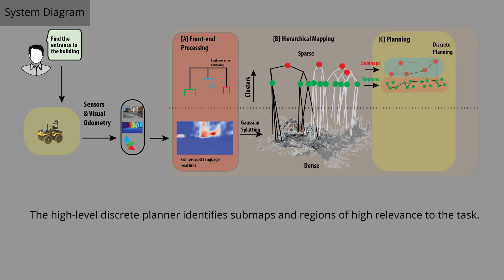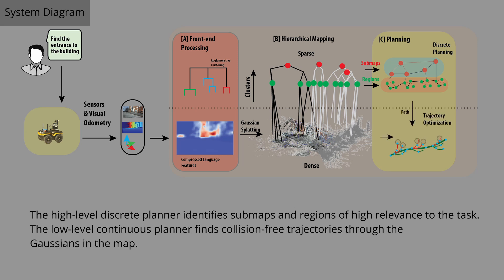The high-level discrete planner identifies sub-maps and regions of high relevance to the task. The low-level continuous planner finds collision-free trajectories through the Gaussians in the map.